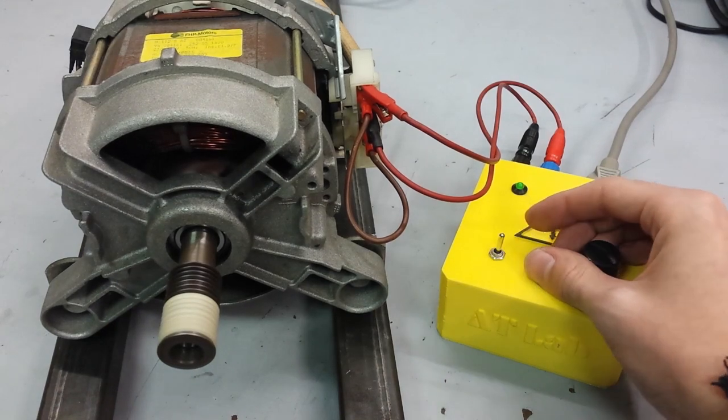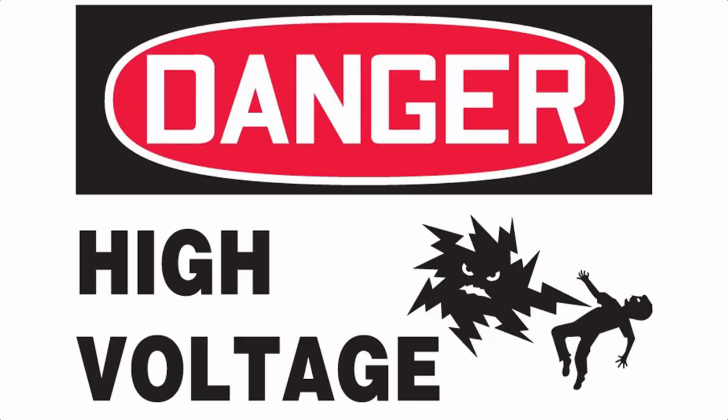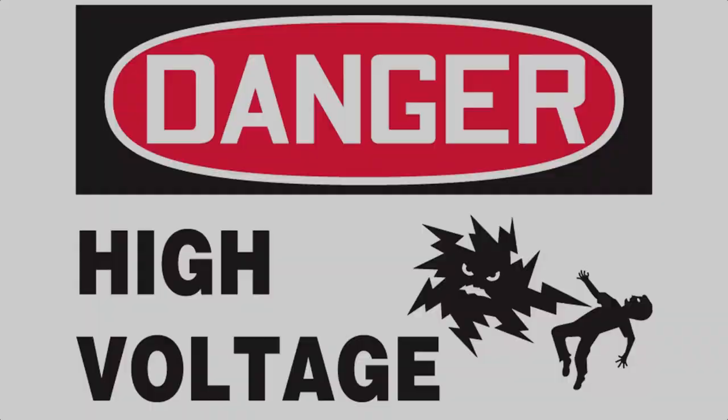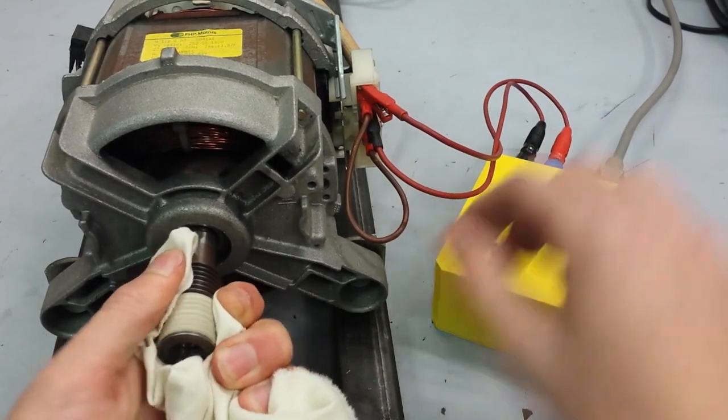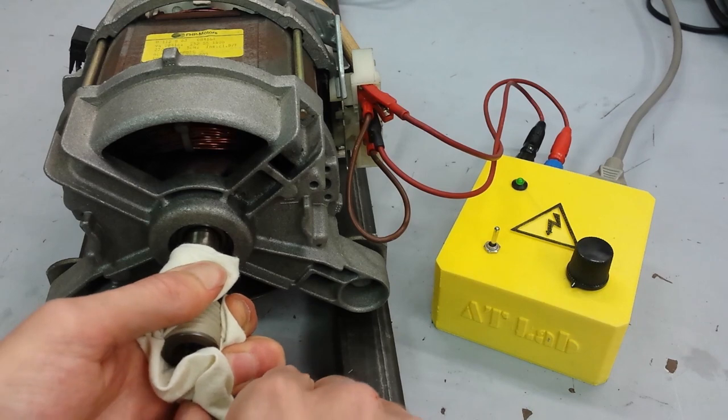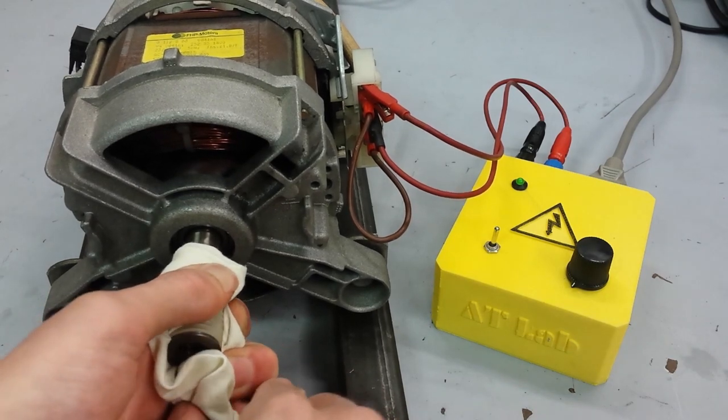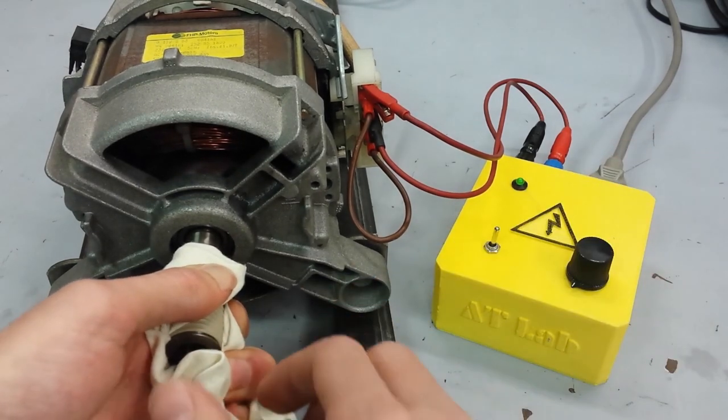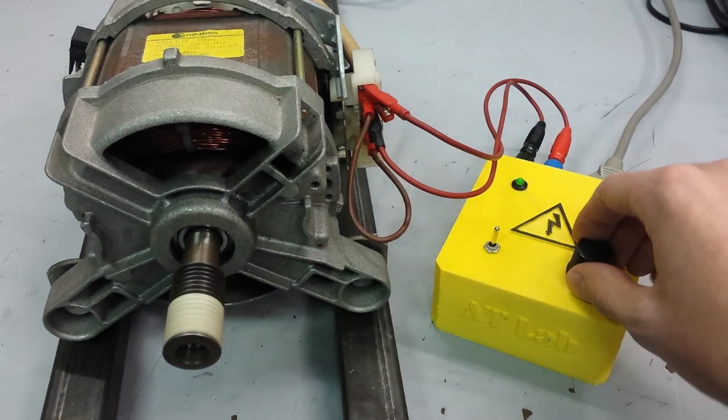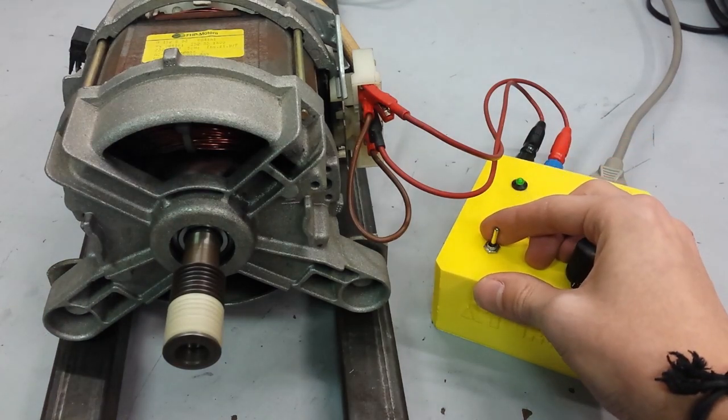If you want to perform this test on a washing machine motor or similar be careful with the source as if you connect the motor straight to the mains you can cause serious damage as you wouldn't be able to keep the motor in place. Plus if you exceed with the current you could even burn the motor.